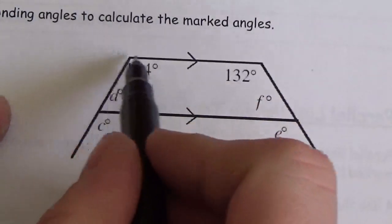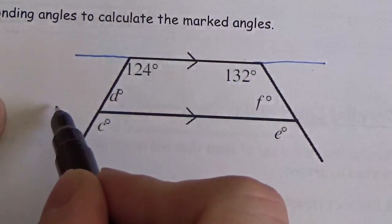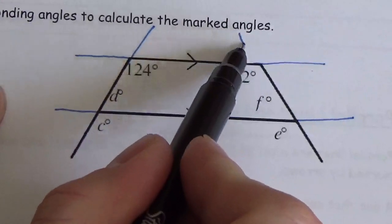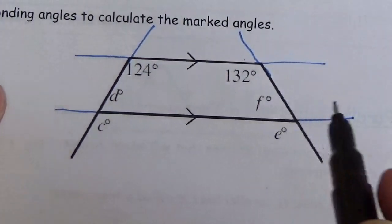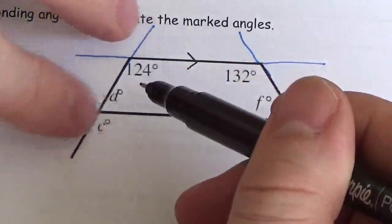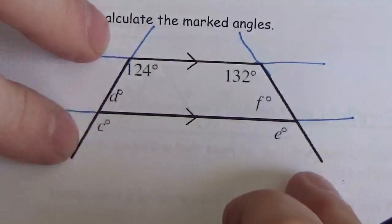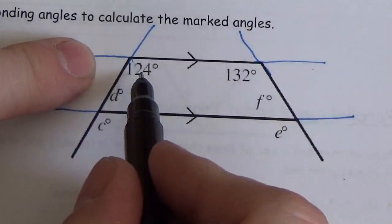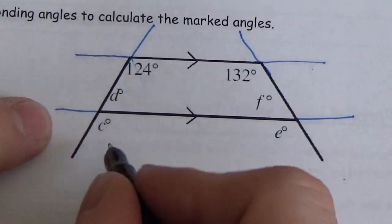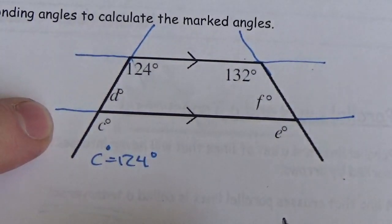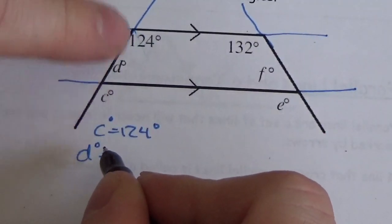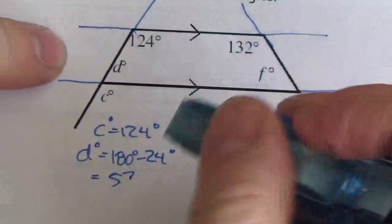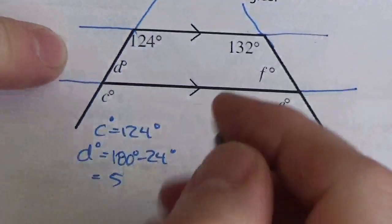There's a lot going on here, but notice the parallel lines. It sometimes helps to extend them. Don't hesitate to extend those lines if they help you see things. I've got two transversals. The angles are formed by each transversal and the parallel lines — these are two different sets of angles. Looking at this vertex going down, I get 124°, so angle C should be 124 degrees. D will be 180° minus 124°, which is 56 degrees.